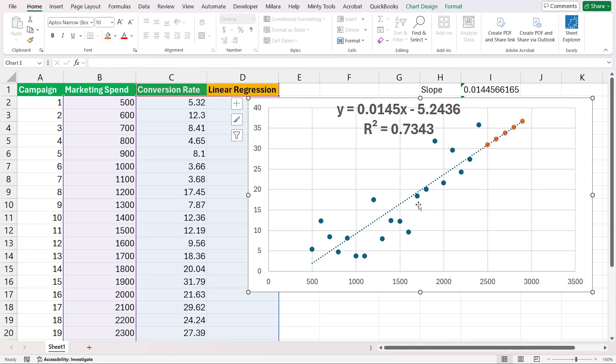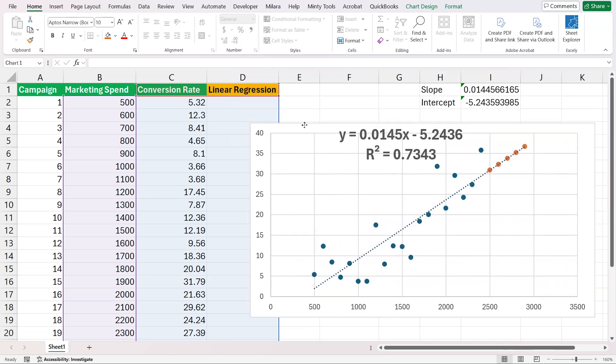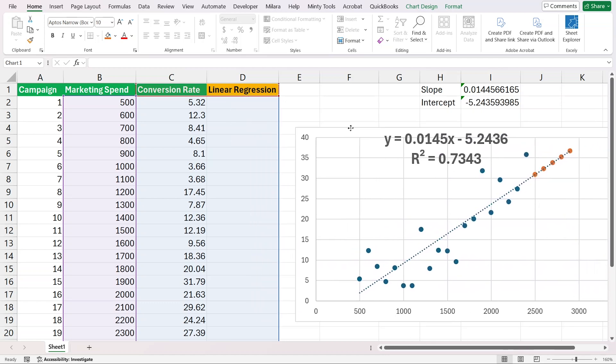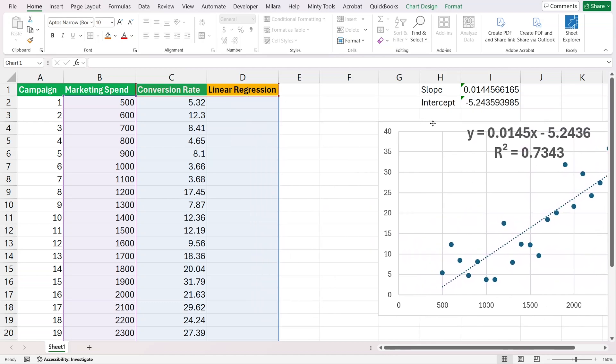However, it looks like I have more of a curvilinear relationship here. You see that as my marketing spend increases, I actually seem to be getting more in terms of conversion. This would lead me to believe that a linear regression might not be the right choice here.